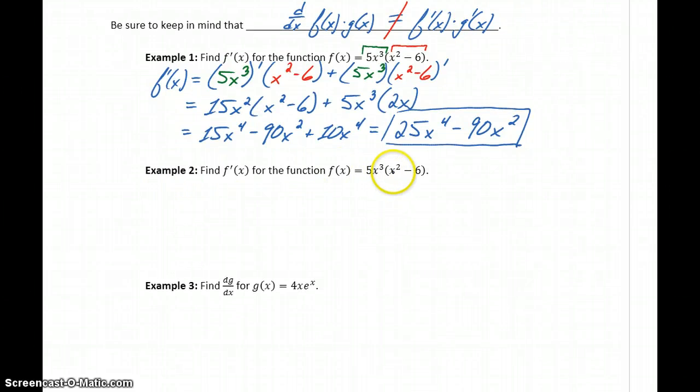In example two, we have the exact same function. We want to find that derivative, but in this particular case we're going to do that without applying the product rule. So the first thing we're going to do is rewrite the function as 5x to the fifth minus 30x cubed.